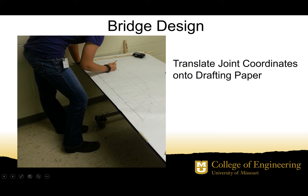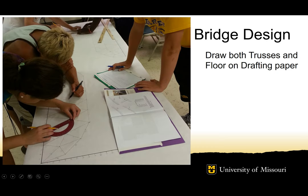If you use cross members in the software, I advise you to add an additional joint at the intersection so members aren't just running over each other — this allows you to connect members at that point. You then translate the coordinates of all joints onto paper and draw the members as you designed them in the software. Here's an image of students drawing their bridge on drafting paper, which we will provide for you.